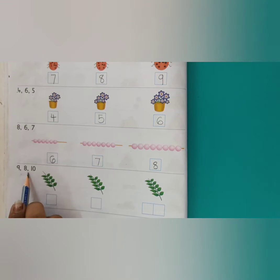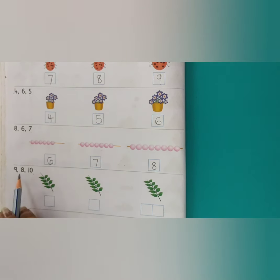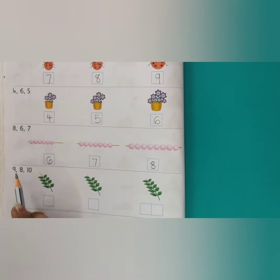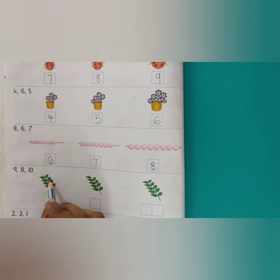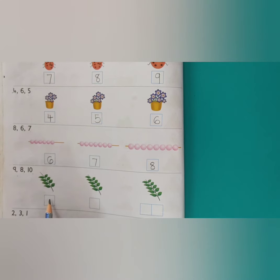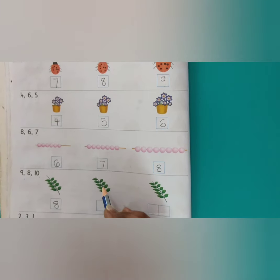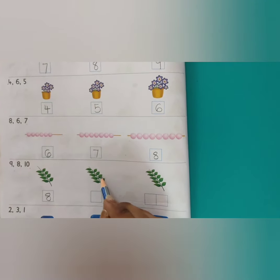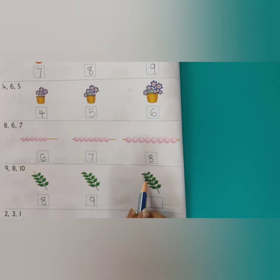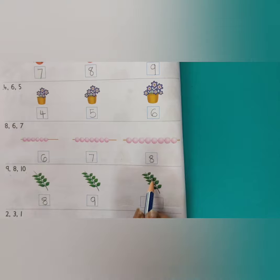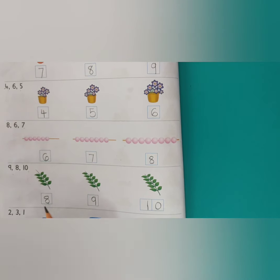फिर 9, 8, 10 — यहाँ पर यह तीन नमबर दिये हैं ना. तो पहले कौन सा नमबर लिखेंगे? Small to big होता है, तो इन तीन में से हम 8 लिखेंगे. फिर एक बार counting करते हैं — 1, 2, 3, 4, 5, 6, 7, 8 — तो यहाँ पर 8 लिखेंगे. फिर 1, 2, 3, 4, 5, 6, 7, 8, 9 — तो 8 के बाद 9 लिखेंगे. फिर 1, 2, 3, 4, 5, 6, 7, 8, 9, 10 — तो last में 10 लिखेंगे. तो हुआ ना small to big — यह 8 small है और 10 big है.